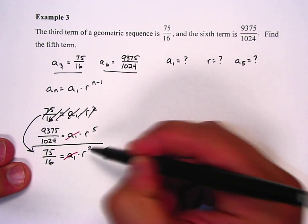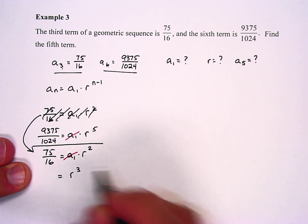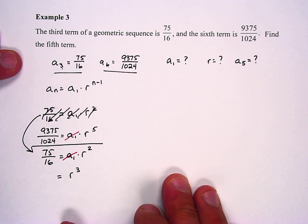The other nice thing is we have r to the fifth over r squared, which turns into r cubed, because when you divide, you subtract exponents.